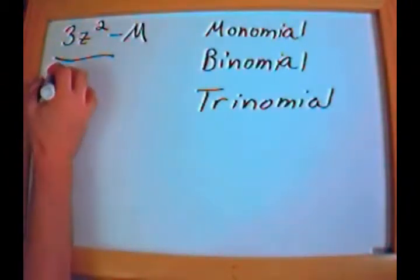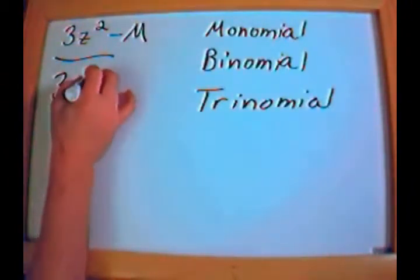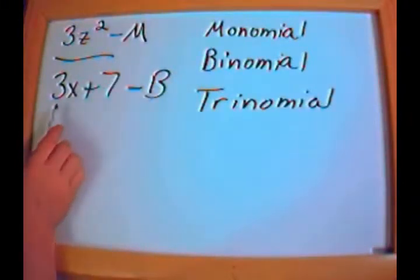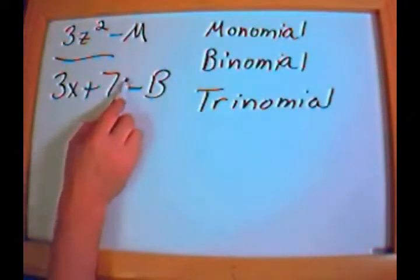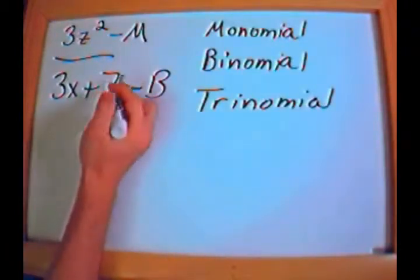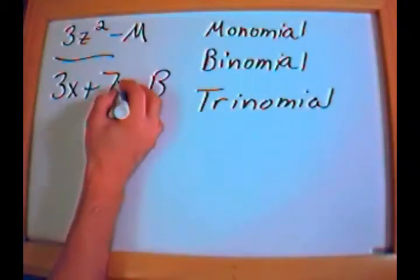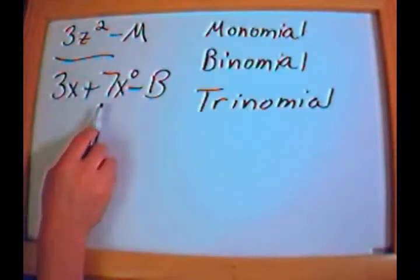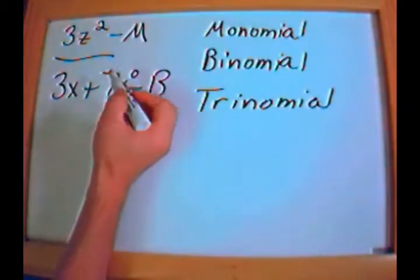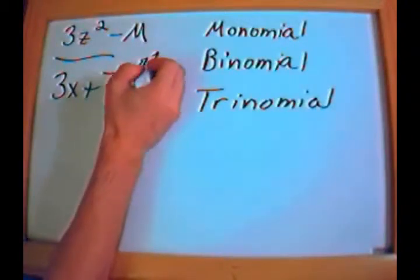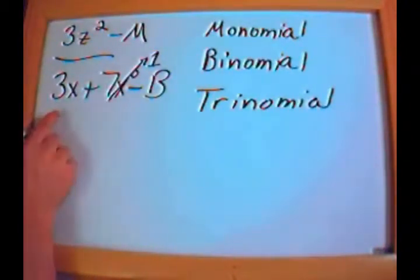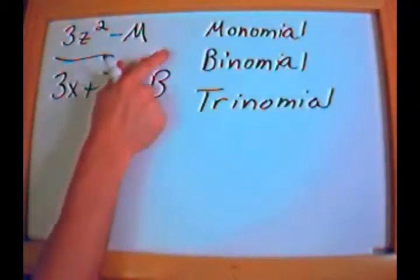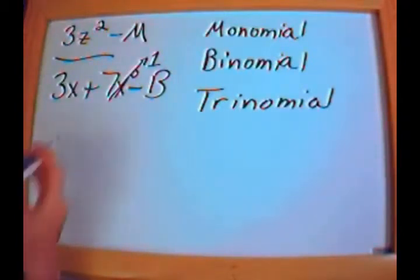As an alternative, if I had something like 3x plus 7, would that be a monomial, binomial, or trinomial? That would be a binomial, because it has two terms. Notice there is no x next to the 7, but if you put an x to the 0 power, anything raised to the 0 power is simply 1. So this is a binomial because it has two terms involving x.